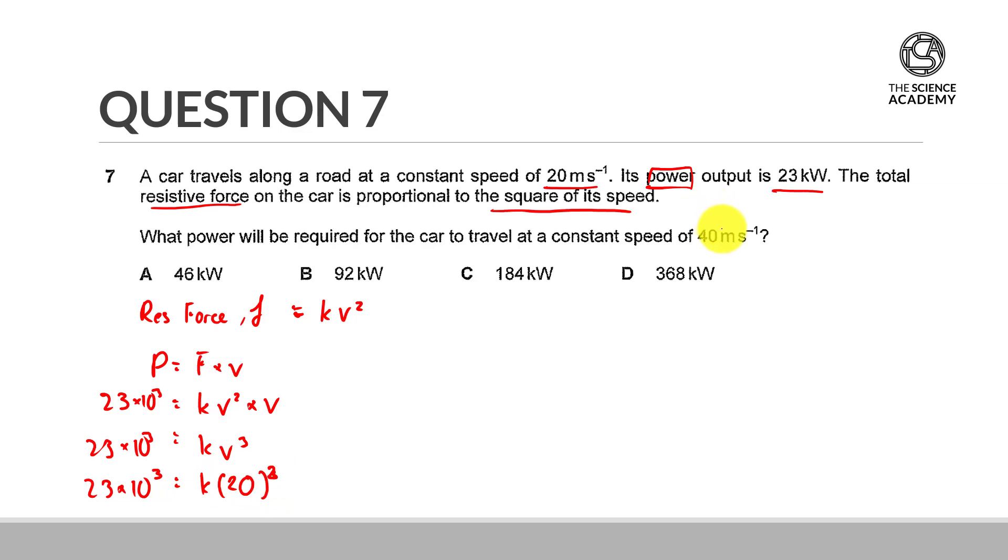So the question then asks us what the power will be when it's travelling at 40 meters per second. So once again, because we have shown that the power is equal to kv cubed, our new power is going to be equal to k times the new speed cubed.